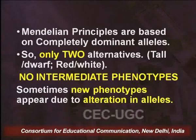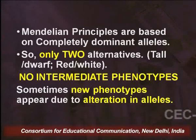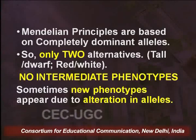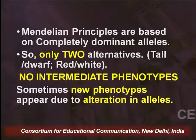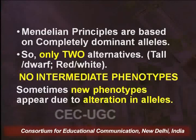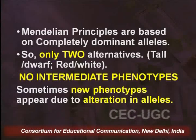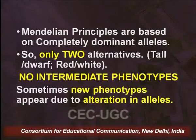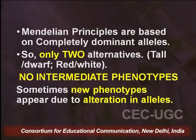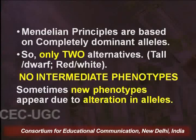The Mendelian principles are based on completely dominant alleles. As I said before, Mendel was very lucky because the seven characters he chose were not linked — even if present on the same chromosomes, they were far apart to avoid linkage. And more pertinent here: all of the characters he chose were of completely dominant alleles.